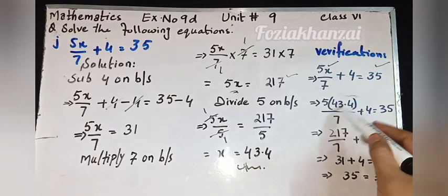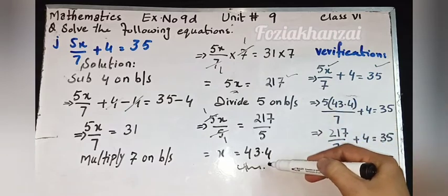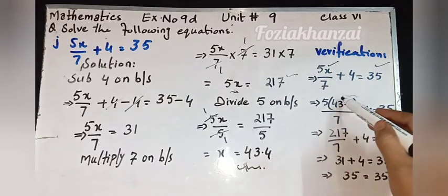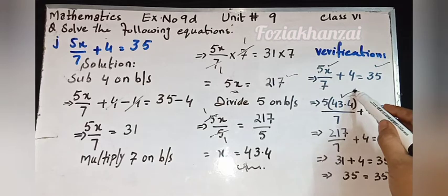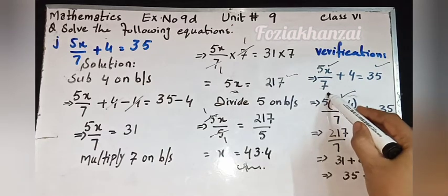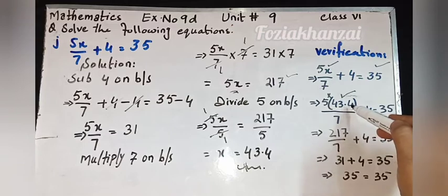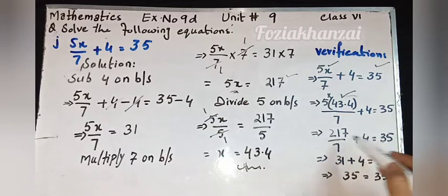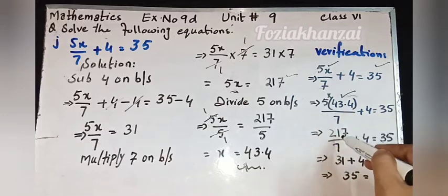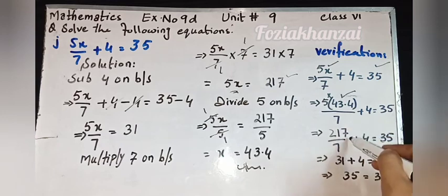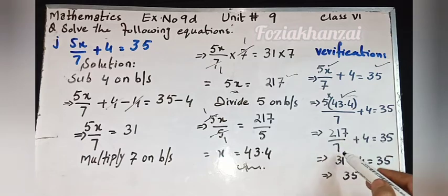Now verification. First step: copy the question. Second step: simple replacement of x. We put the value of x, which is 43.4, right over here. We have a multiply sign, so 5 multiplied by 43.4, remaining parts copy down.